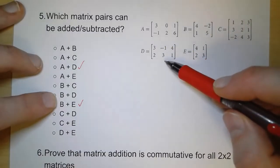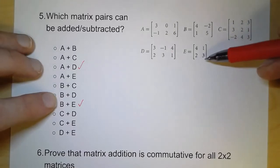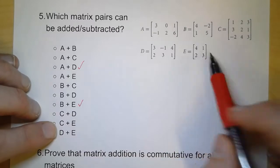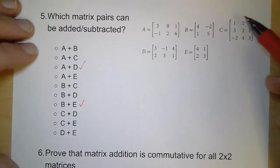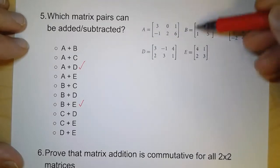C and E. Different numbers of both rows and columns. So that doesn't work. And then finally, D and E. They have different numbers of columns. So the only two matrices that can be added or subtracted are A and D, and B and E.